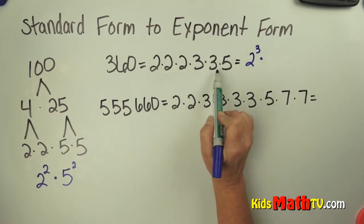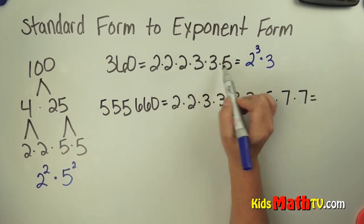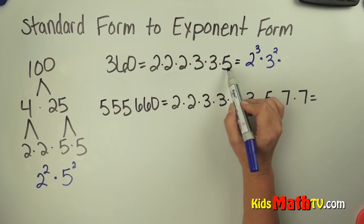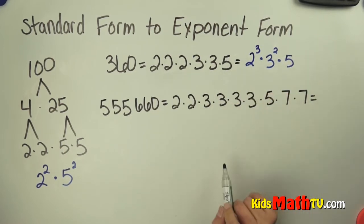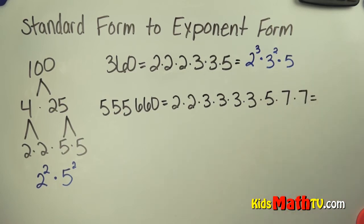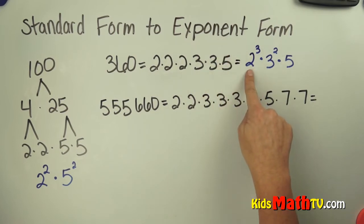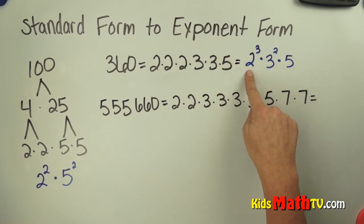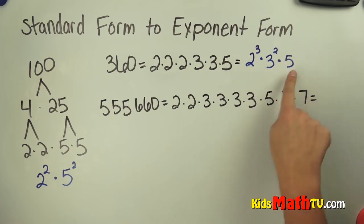Multiplied by a base of 3. How many 3's are there? There's just 1, so the exponent is 2. Multiplied by a base of 5 — how many are there? There's only 1, so I just leave it as 5. So 360 in exponent form is 2 to the 3rd power times 3 to the 2nd power times 5.